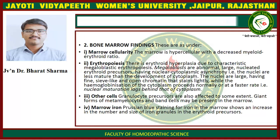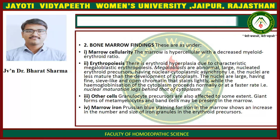Bone Marrow Findings — Marrow Cellularity: The marrow is hypercellular with a decreased myeloid:erythroid ratio. Erythropoiesis: There is erythroid hyperplasia due to characteristic megaloblastic erythropoiesis. Megaloblasts are normally large nucleated erythroid precursors having nuclear-cytoplasmic asynchrony — that is, the nuclei are less mature than the cytoplasm. The nuclei are large, having fine, open chromatin that stains lightly, while hemoglobinization of the cytoplasm proceeds normally or at a faster rate — that is, nuclear maturation lags behind that of the cytoplasm.